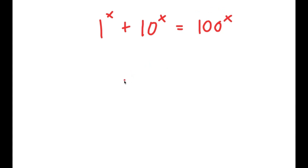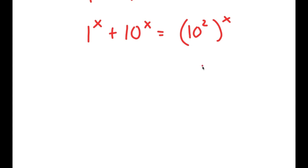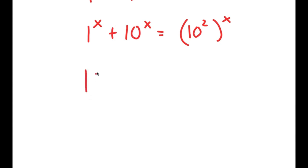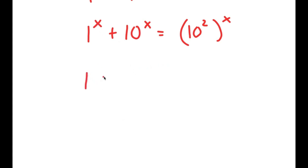To solve this, I'm going to first rewrite this as 1 to the power of x plus 10 to the power of x is equal to 10 squared to the power of x. Now, 1 to the power of any number — like 1000 or even infinity — is still equal to 1. So no matter what value x could be, 1 to the power of x will still equal 1, meaning we can just say this is 1 plus 10 to the power of x is equal to 10 squared to the power of x.